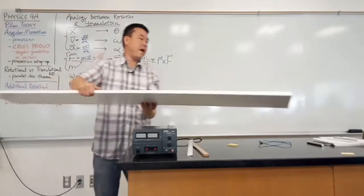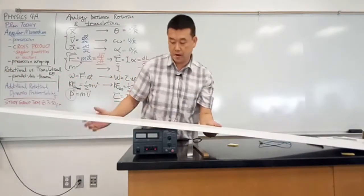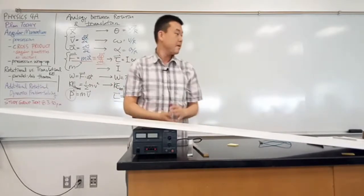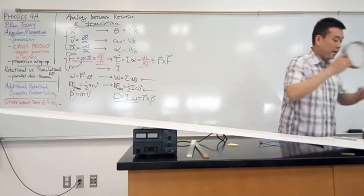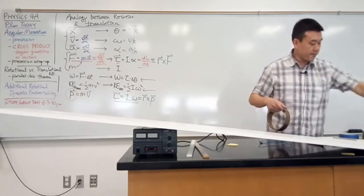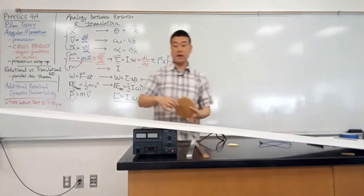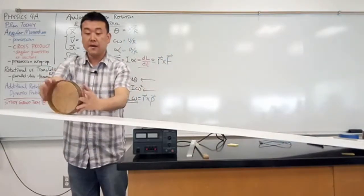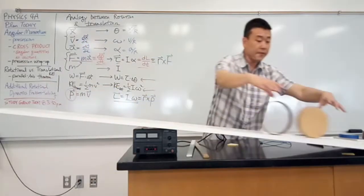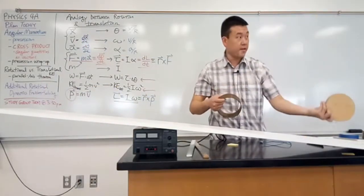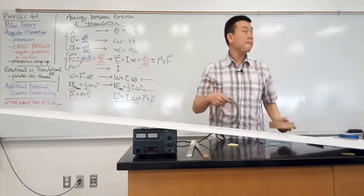So this is the physical setup I want to use to describe what I want to describe now. You've seen this before — I used this setup to illustrate the difference in the kinetic energy of these two. I rolled them down at the same time and the disk rolled down faster because it has less rotational kinetic energy, so it has more translational kinetic energy. Remember that?